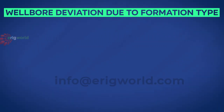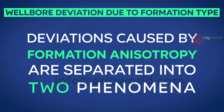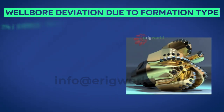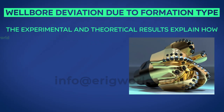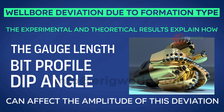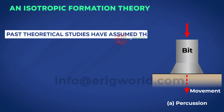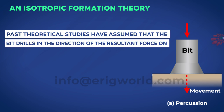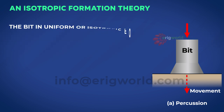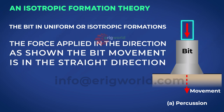Deviations caused by formation anisotropy are separated into two phenomena. An initial deviation is caused by the rock-bit interaction. Experimental and theoretical results explain how the gauge length, bit profile, and dip angle can affect the amplitude of this deviation. Past theoretical studies have assumed that the bit drills in the direction of the resultant force on the bit. In uniform or isotropic formations, as shown, when drilling a uniform formation, the force is applied in the direction shown and the bit movement is in the straight direction.